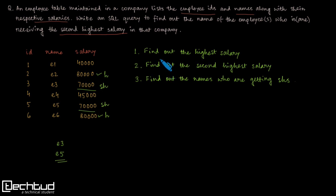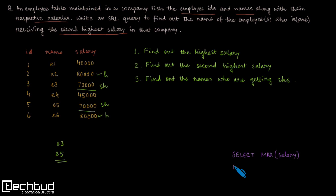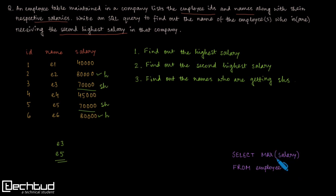The first step is to find the highest salary. The SQL query for that is: SELECT MAX(salary) FROM employee. We are not doing any grouping, so we consider the entire table and find the maximum salary. This part of the query will give you 80,000 for this particular example instance.